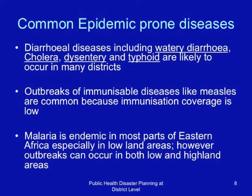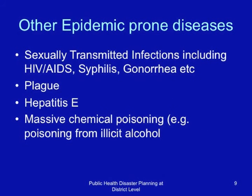However, malaria outbreaks can occur in both low and highland areas. In areas where malaria is endemic, outbreaks occur when the threshold far exceeds what is expected for that season. Other epidemic-prone diseases include sexually transmitted infections including HIV/AIDS, syphilis, gonorrhea, plague, hepatitis E, and massive chemical poisoning — especially from illicit alcohol, which is becoming a common public health problem in Eastern Africa.